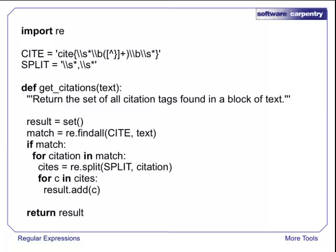For readability's sake, we'll put our patterns at the top and give them memorable names. Inside the function, we'll pull out all the citations using the first pattern, then split each result everywhere there's a comma with optional spaces before or after it. We'll stuff all the results into a set and return that. If no matches were found, that set will be empty.